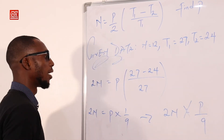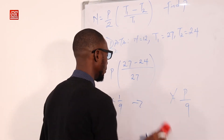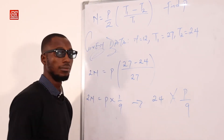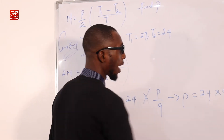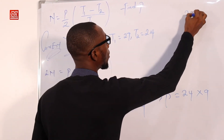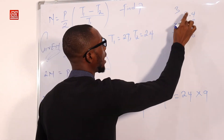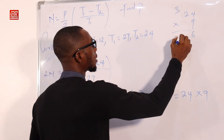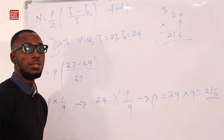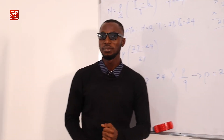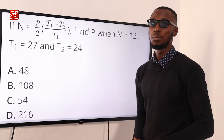Cross-multiplying with n equals 12 gives 2 times 12 equals 24 equals p over 9. Therefore p equals 24 times 9. Calculating: 9 times 4 is 36 (write 6, carry 3), 9 times 2 is 18 plus 3 is 21. So p equals 216. Option D is correct.